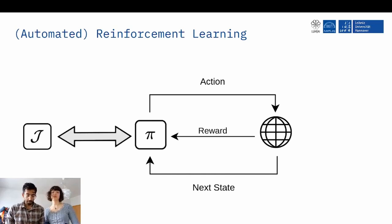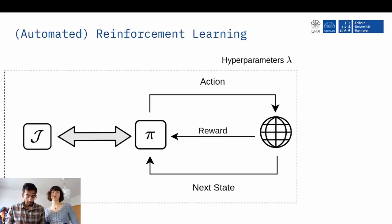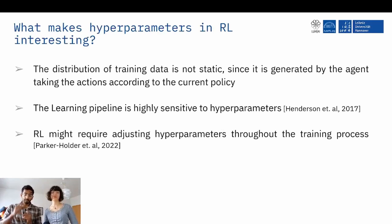The thing is, most of this, just like any other pipeline, is controlled with a set of hyperparameters. And one of the major goals of AutoRL is to automate the process of configuring these hyperparameters. Now, what makes reinforcement learning specifically interesting is the fact that the distribution on which this policy learns is dynamic, it's non-stationary, because it's being generated by the policy itself through the actions. And this makes the reinforcement learning pipeline highly sensitive to hyperparameters, as noted by Henderson et al. in 2017.